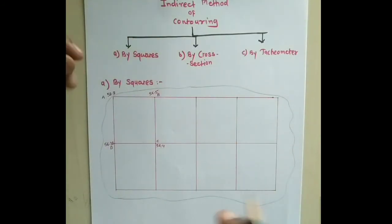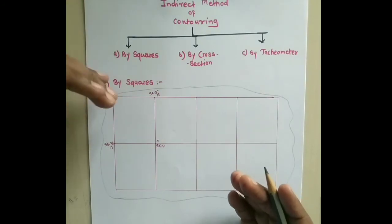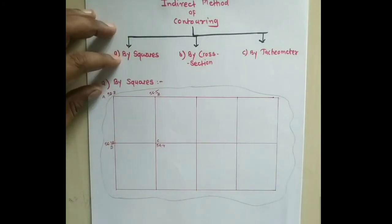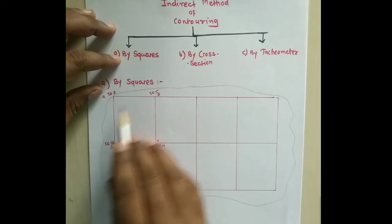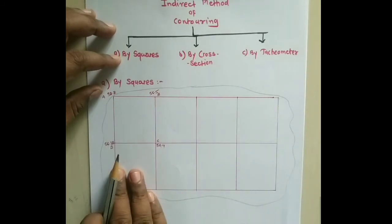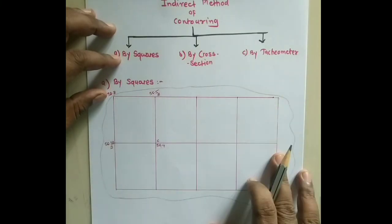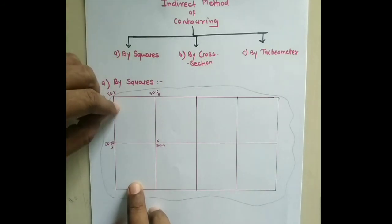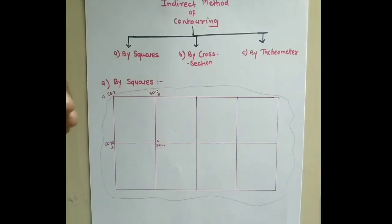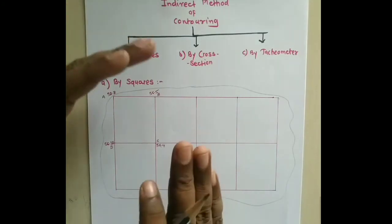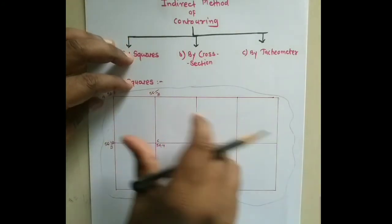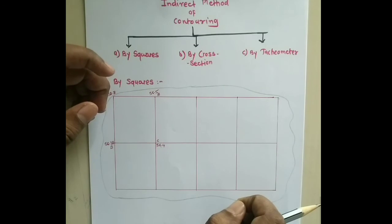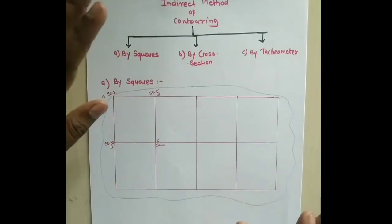Just like in the direct method, we find the reduced level (RL) of each particular point — similarly here, we find the RL of every corner. After finding the RLs, we trace this on a plan paper and plot it scale-wise. Generally in the by-squares method, squares of 5 meters to 30 meters distance are plotted. It can be in rectangular or square shape, depending upon the nature of land.